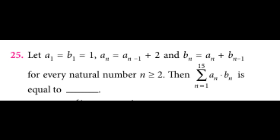Hello everybody, this is JEE Mains Problem 25, 2022 Session 2. The problem states that a₁ equals b₁ equals 1, aₙ equals aₙ₋₁ plus 2, and bₙ equals aₙ plus bₙ₋₁ for every natural number n greater than or equal to 2.